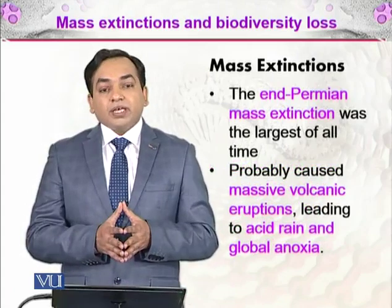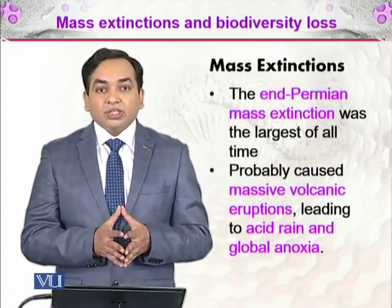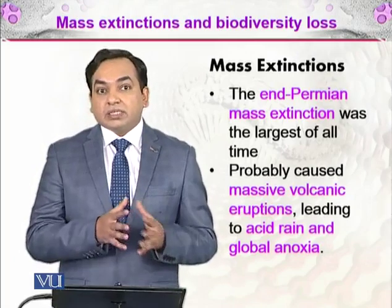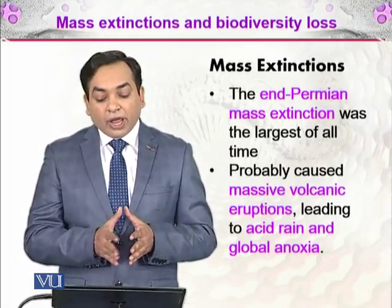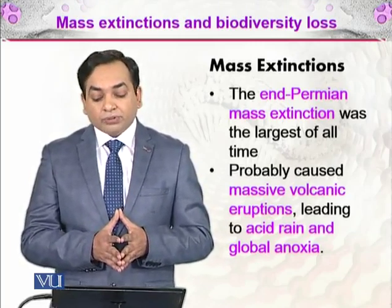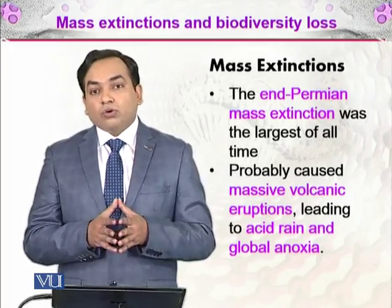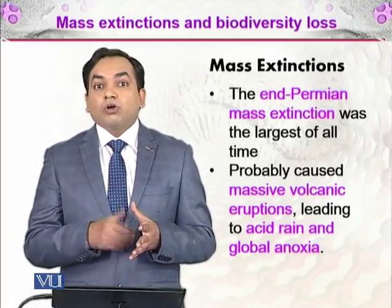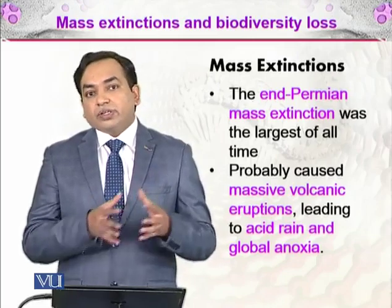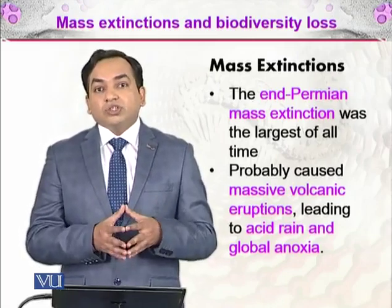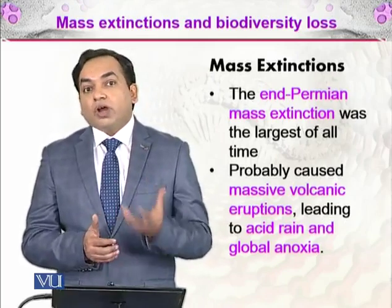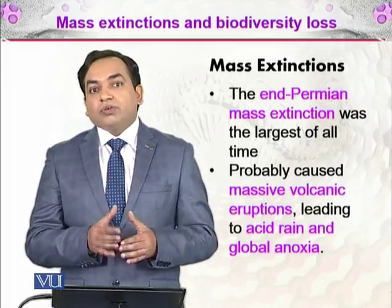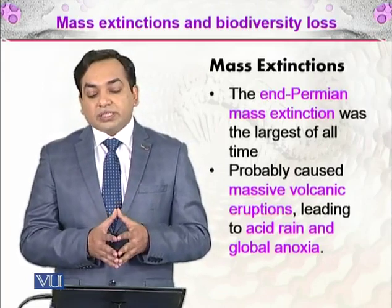The End-Permian mass extinction was the largest of all time. It wiped out 90% of biodiversity in some areas of the world and was caused by massive volcanic eruptions, which led to acid rain and global anoxia. Wherever the prefix 'an' appears it means absence, and 'oxia' comes from oxygen, so anoxia means absence of oxygen. Wherever there is an absence of oxygen, organisms relying on oxygen will go extinct, and we know from fossils of that era that organisms died in huge amounts.